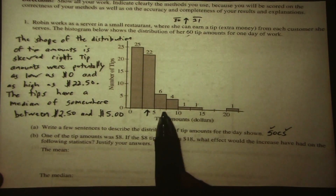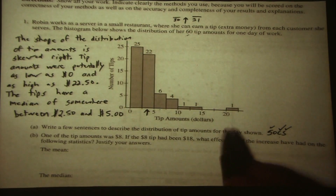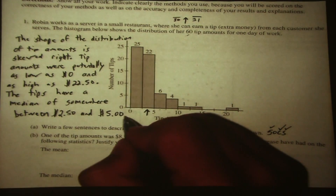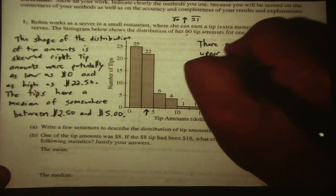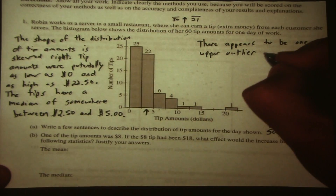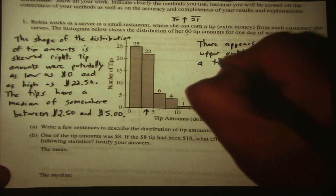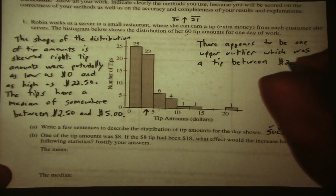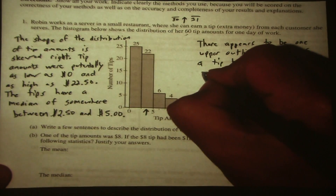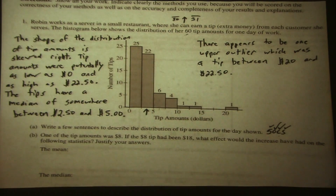If you use the middle of each of these classes, you could type this into your calculator and get a pretty good estimate of the mean or the median. So that was center. And now we should talk about the outlier. There appears to be one upper outlier, which was a tip between $20 and $22.50. I think Part A is done.